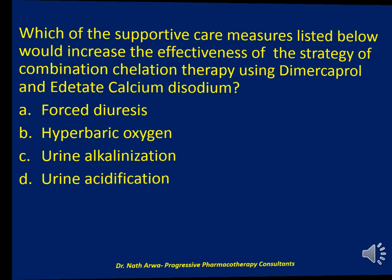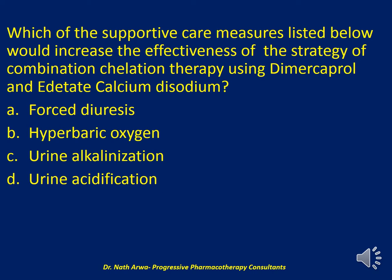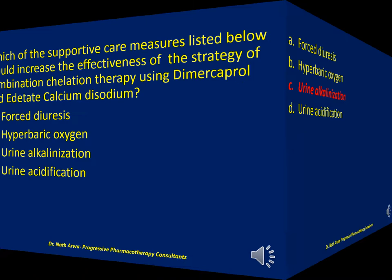The next question reads: Which of the supportive care measures listed below would increase the effectiveness of combination chelation therapy using DMSA and CaNa2EDTA? Is it forced diuresis? Is it hyperbaric oxygen? Is it urinary alkalinization? Or is it urinary acidification? I'll give you 10 seconds. The correct answer is C — urinary alkalinization.